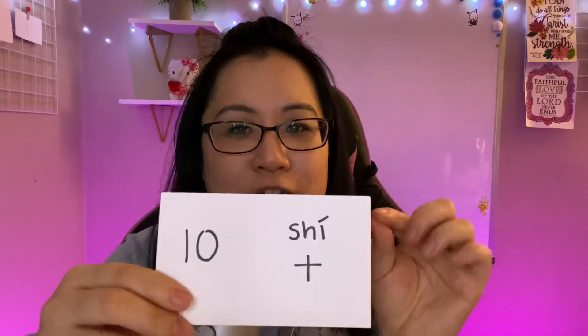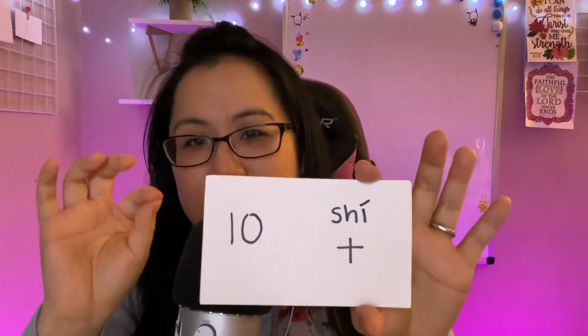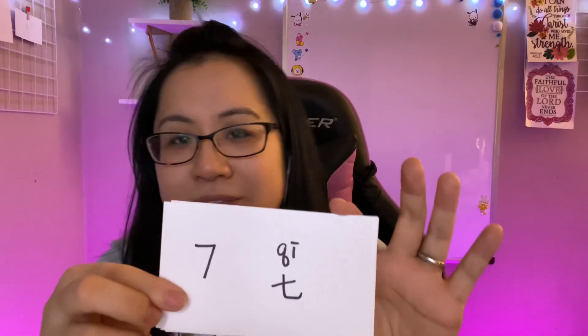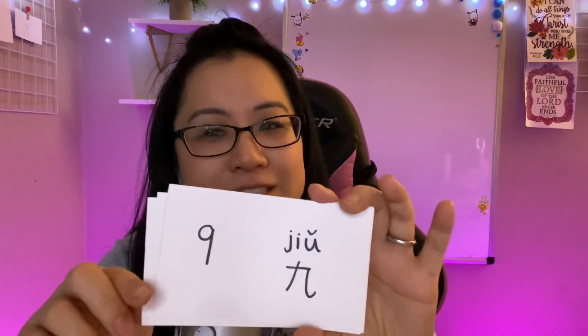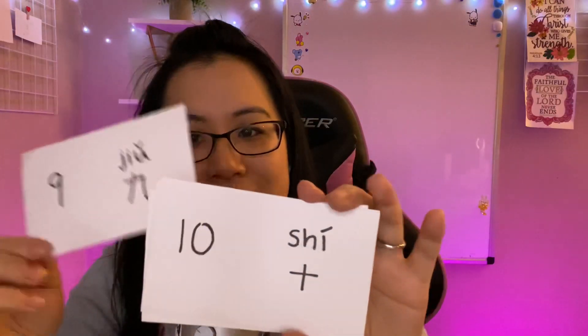And then ten. Ten is shi. Shi. And the Chinese character for ten actually kind of looks like a plus sign. So that is it. Very good. So: liu, chi, pa, jiu, shi. Liu, chi, pa, jiu, shi. Very good.